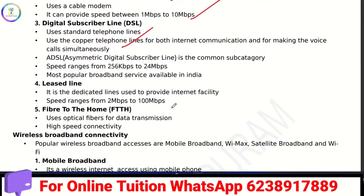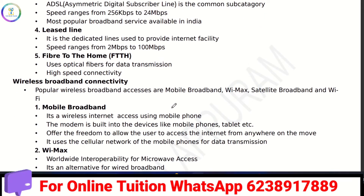A leased line is a dedicated line available for internet facilities, but it is expensive. Fiber to home uses optical fibers for data transmission and provides high-speed connectivity.